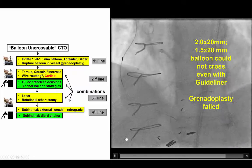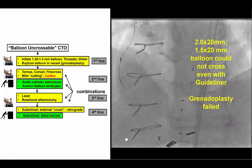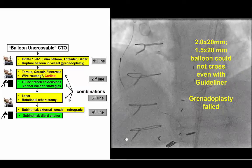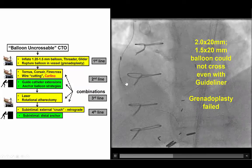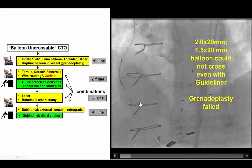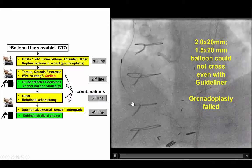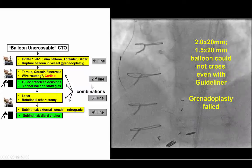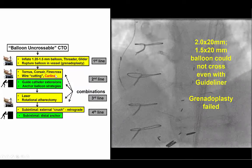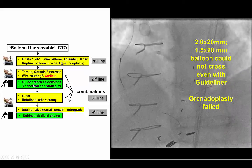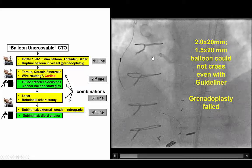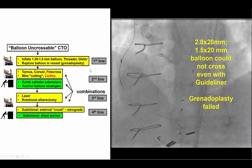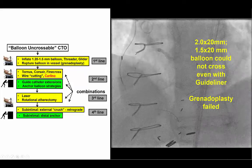However, we then encountered a problem not uncommon when true-to-true crossing is done with guide wires: no balloon could cross the lesion. We tried several small balloons — 1.5 and 2.0 — that could not cross. We tried grenoplasty, which is intentional rupture of a small 1.5 balloon; however, this did not work either. We then moved on to the second-line treatment for balloon uncrossable, which is combining small balloons with extra guide catheter support. We advanced a guideliner, but despite the guideliner and several small balloons, we were not able to cross the lesion.